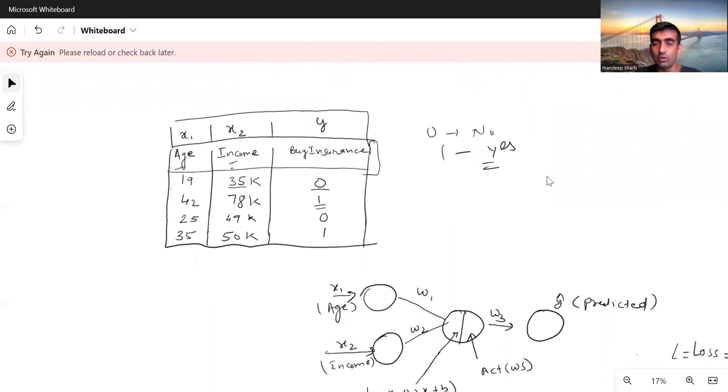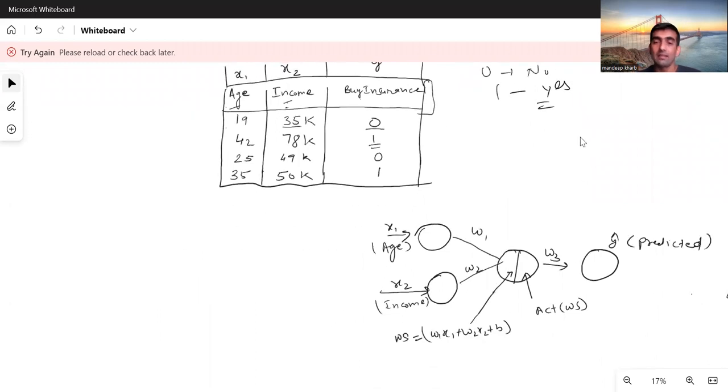Now let me show you - I have taken a sample neural network, a simple neural network. This is my first layer, which is the input layer. You can see that x1 is age and x2 is income, which is passed to the next layer. The next layer is of hidden neurons.